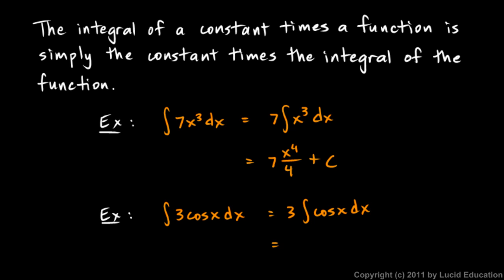And let's go ahead and integrate that because it's easy. The integral of the cosine function would be the sine function. So 3 sine x plus c. So a constant multiplier can be taken out of the integral sign.